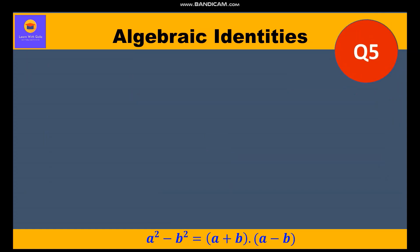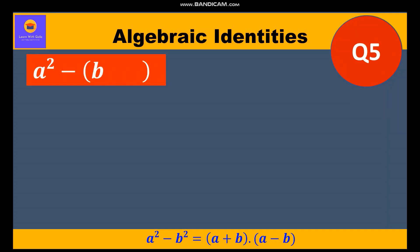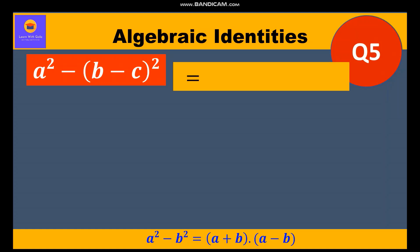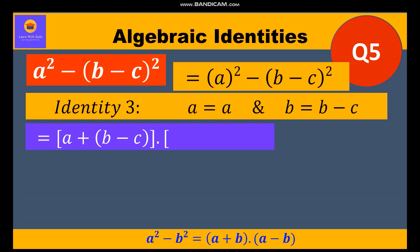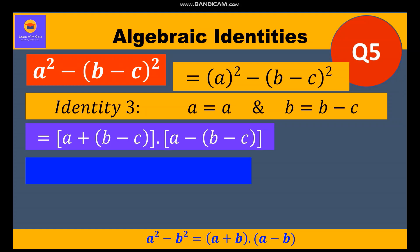Now let's move to our fifth question: a² - (b - c)². We can write this as (a)² - (b - c)², which is Identity 3 where a = a and b = (b - c). Substituting, we get two factors: (a + b - c) and (a - b + c). Opening the bracket, the minus sign changes all signs inside, giving us (a + b - c)(a - b + c).